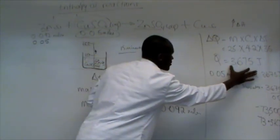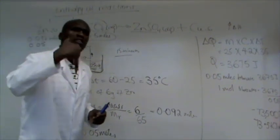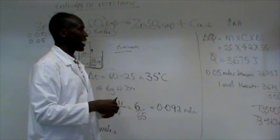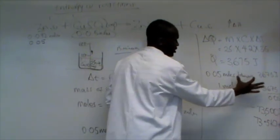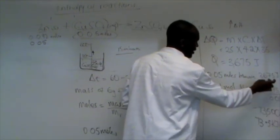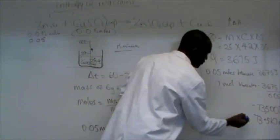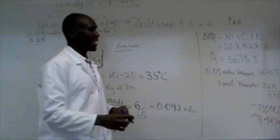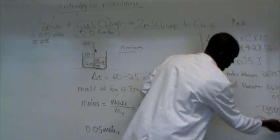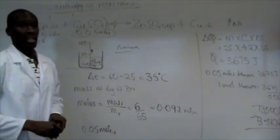Now, this amount of energy is what was liberated by 0.05 moles. But we want to find out how much heat is liberated if one mole reacts. And therefore, that's why we say 0.05 moles liberate that amount of energy, 3675. What about one mole? One mole is going to be 3675 divided by 0.05, and that's the energy. Now, do not forget that because the reaction is exothermic, you have to indicate that there is a negative sign there. And convert the joules into kilojoules per mole. And basically, that is it.